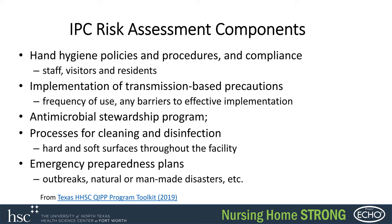Include a process for cleaning and disinfection — different types of surfaces, things used by residents, hard and soft surfaces throughout the facility. And include an emergency preparedness plan. Some facilities have this as a separate plan, but in the infection prevention control plan's risk assessment portion, you should consider outbreaks as emergencies, and also if there were natural or man-made disasters, what factors you have to consider in preventing infections.